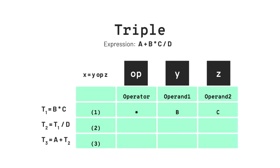The result is stored in a temporary value — let's say 1. The second code is t2 = t1 / d. The operator is slash, operand1 is the result of b * c which we assume to be 1, and operand2 is d. And the result for this code we assume will be stored in temporary value 2.